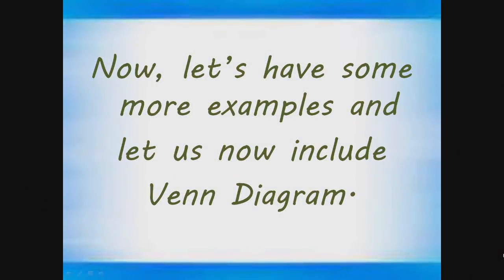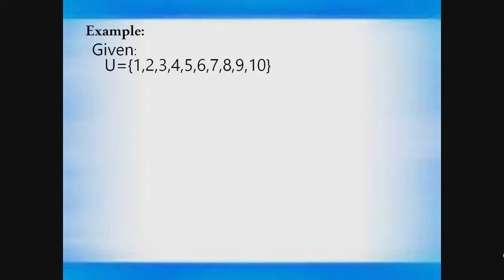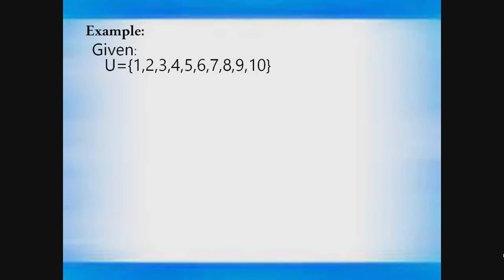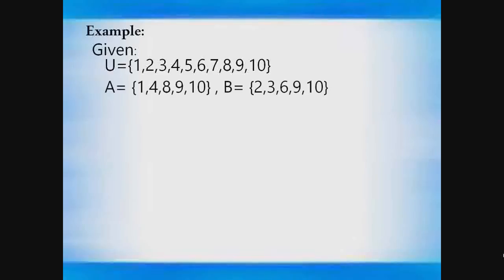Now let's have some more examples and include diagrams. Given U has the elements 1, 2, 3, 4, 5, 6, 7, 8, 9, 10; A has the elements 1, 4, 8, 9, 10; and set B has the elements 2, 3, 6, 9, 10. First, let's look for the complement of set A.